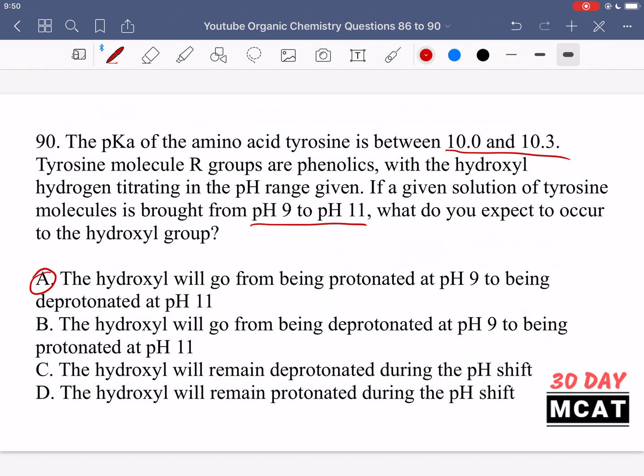Option B is saying the hydroxyl group will go from being deprotonated at pH 9 to being protonated at pH 11. No, that's incorrect. It doesn't make sense. As you go higher in terms of pH you're becoming more basic, so it doesn't make sense that you would have it being protonated at a higher pH. More protons are available at a lower pH. Option C is saying the hydroxyl will remain deprotonated during the pH shift, or protonated. No, those are both incorrect. It's not going to just remain in one form. We are going beyond the pKa. That means that some change is going to occur.